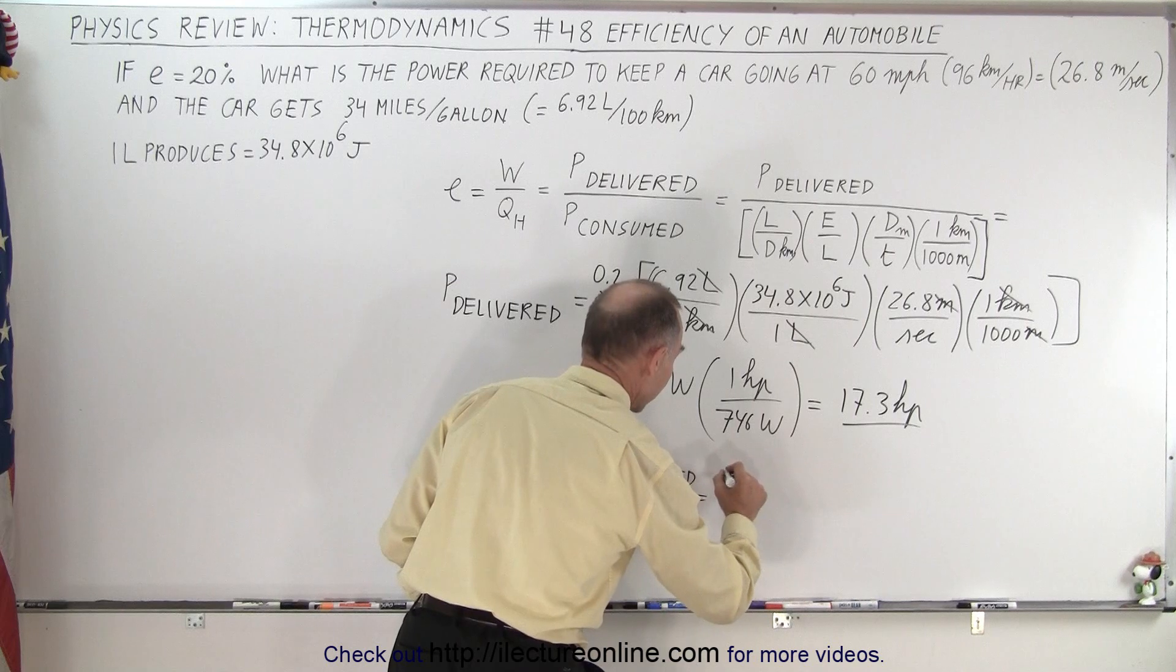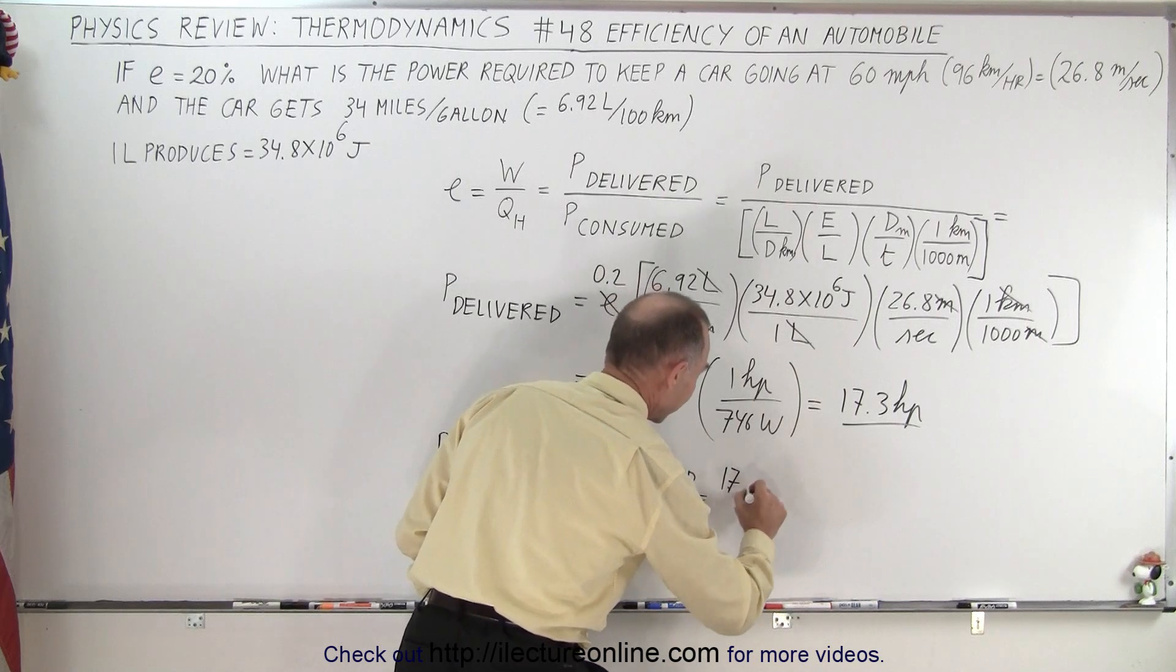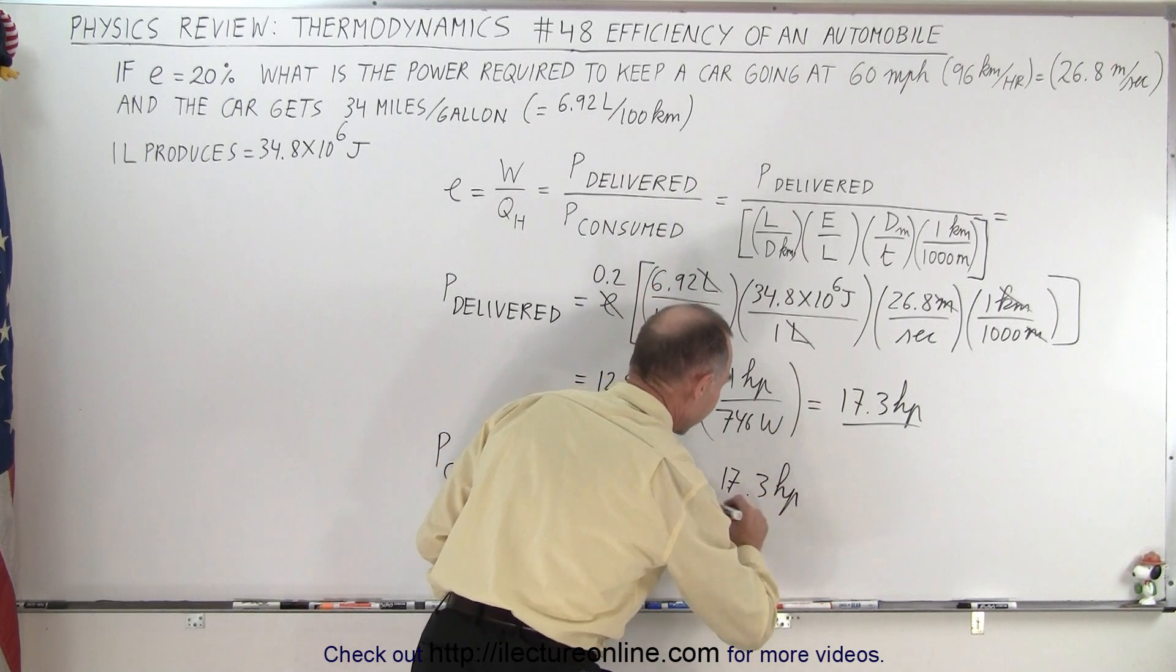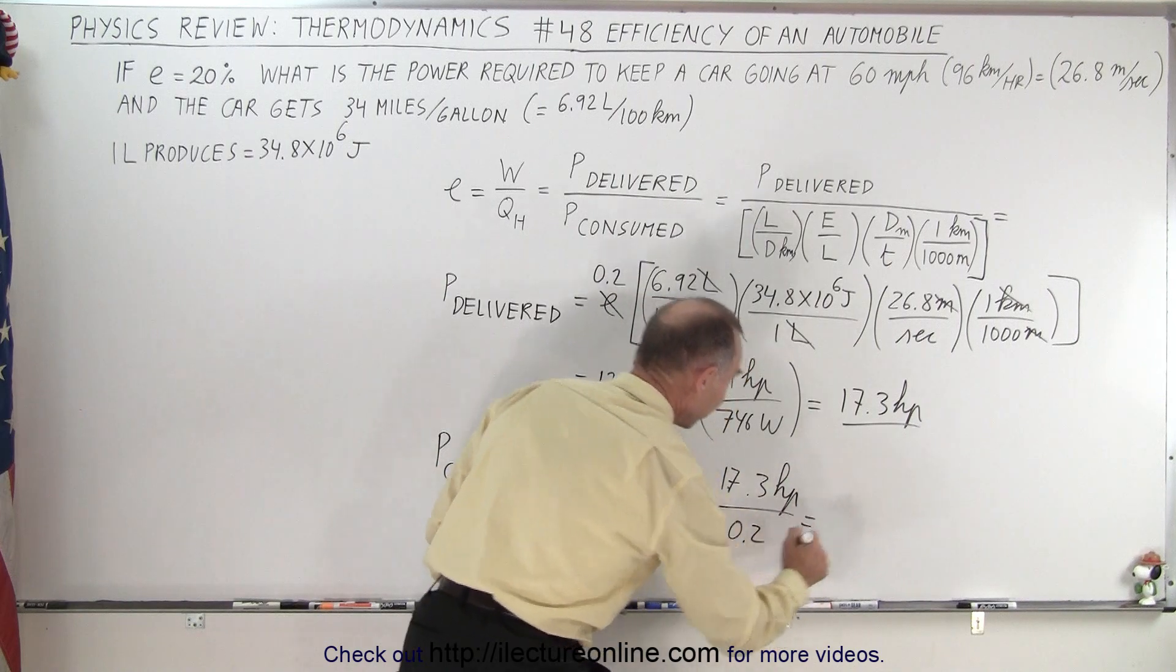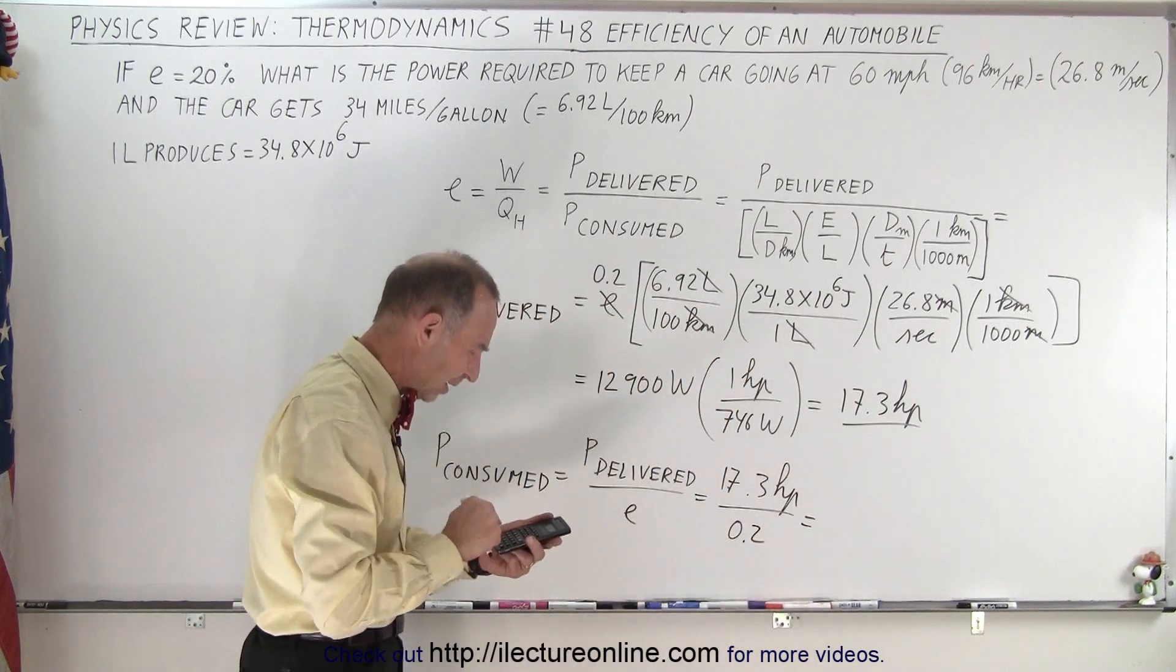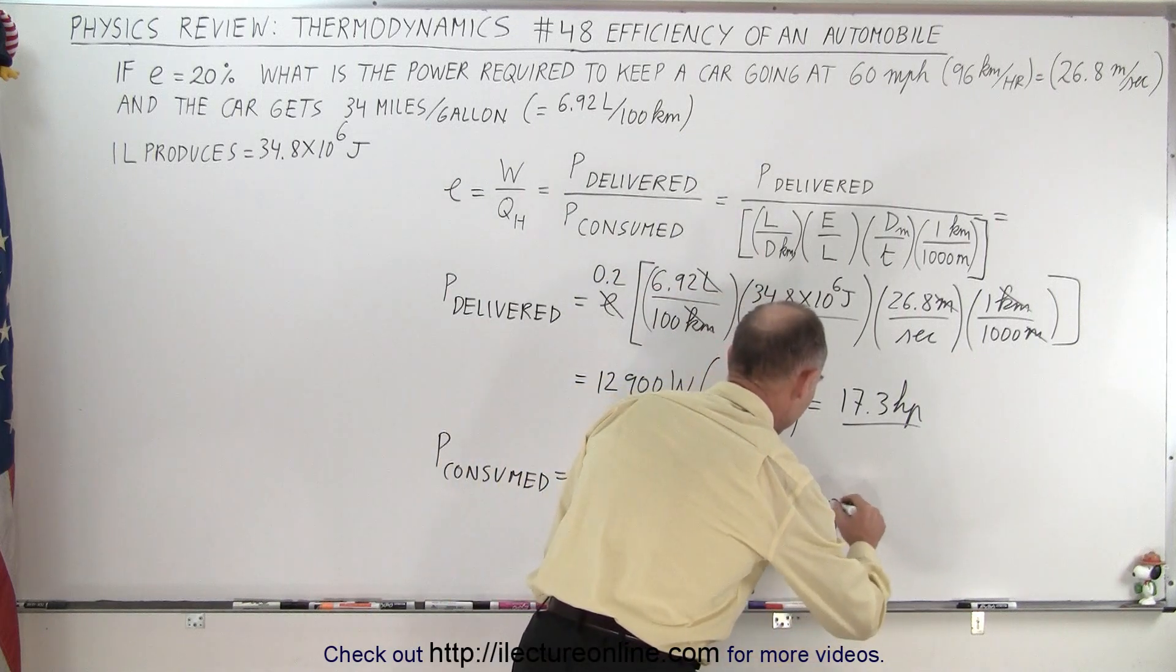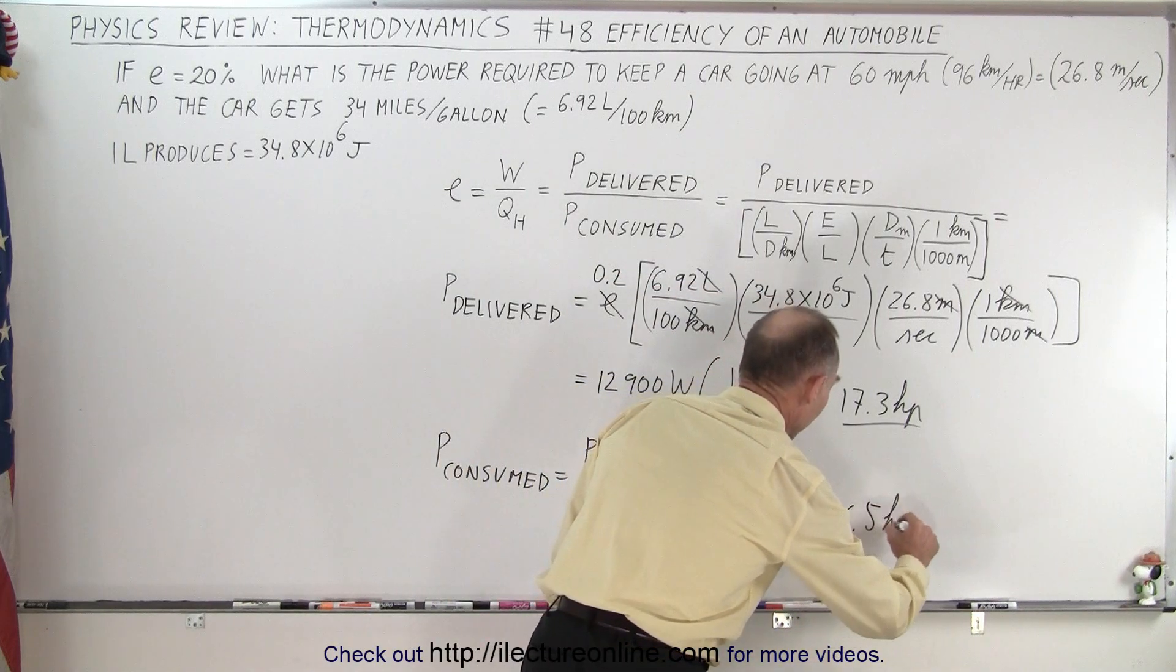So essentially multiply times five, and we get about 86.5 horsepower.